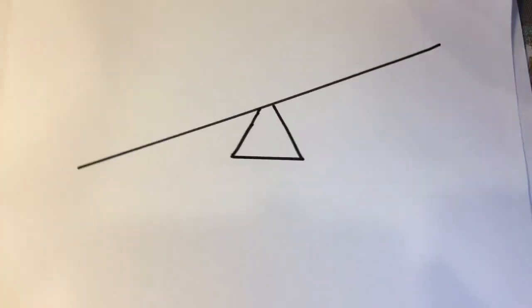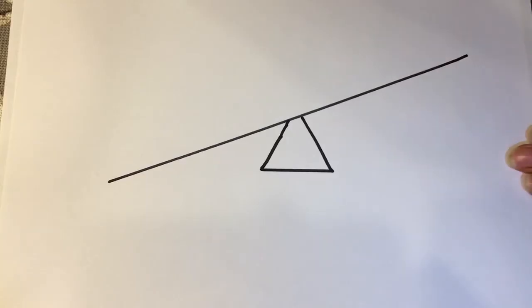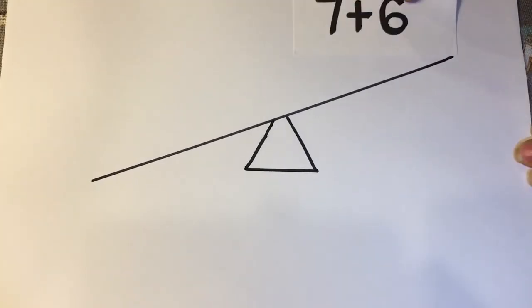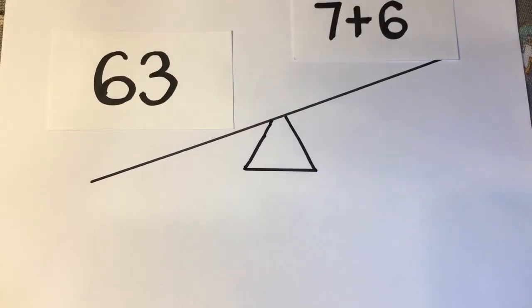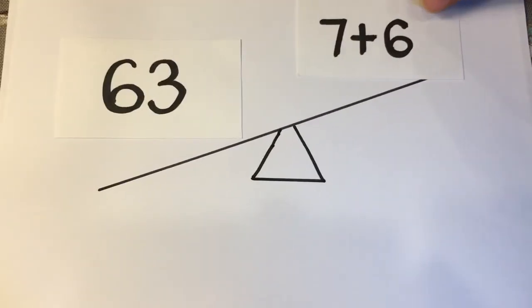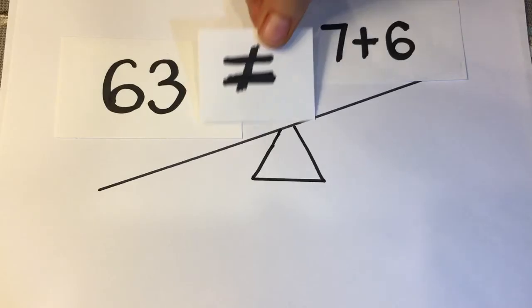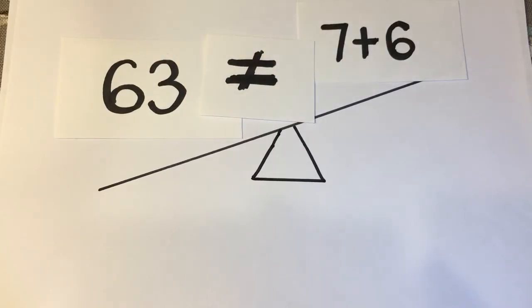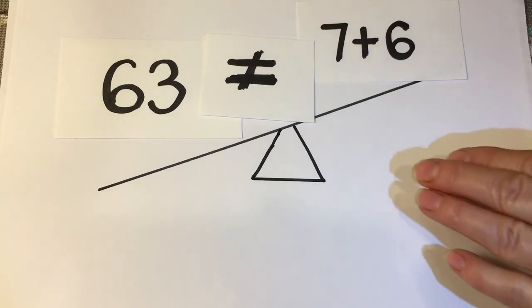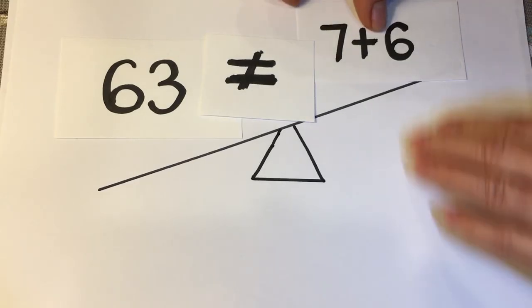Sometimes, however, we might get an equation that is unbalanced. So if we had 7 plus 6 and 63, this equation is not equal. And this is the not equal symbol. And you can even kind of see there's the diagonal in there that represents that the balance is no longer balanced. So this equation is unequal.